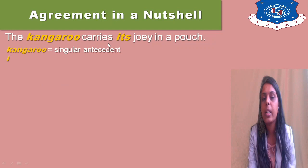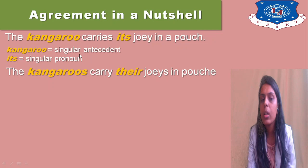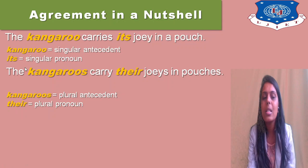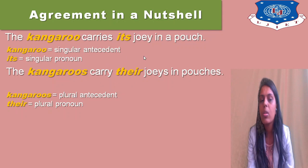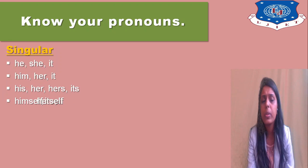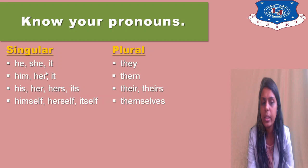For example: 'The kangaroo carries its joy in a pouch.' Kangaroo is a singular antecedent, so the pronoun is also singular — 'its.' Second example: 'The kangaroos carry their joeys in pouches.' Here the antecedent is plural, so the pronoun is also plural — 'their.' You should know your pronouns: singular pronouns are he, she, it, him, her, his, her, hers, its, himself, herself, itself.